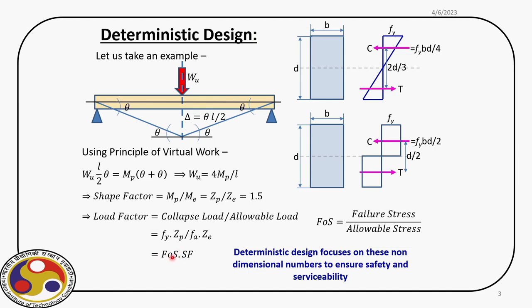The load factor is the product of factor of safety and the shape factor. For a rectangular section, the shape factor turns out to be 1.5. The factor of safety is the ratio of the failure stress to the allowable stress — a number that ensures the safety of the structure. In this process, we precisely define all the parameters involved in the analysis and design: it may be the geometry, material property, boundary conditions, or the analysis type. As we progress in the design process, there is no scope for these parameters to deviate from the values initially fixed. This comes under the deterministic design concept where the factor of safety based approach is used.